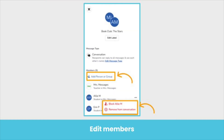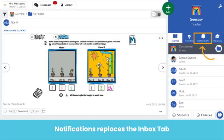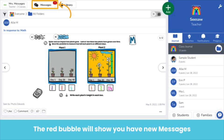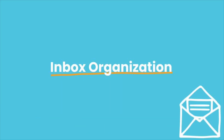Lastly, you can add or remove members from a message. A few more things: with Messages, the Inbox tab is replaced with Notifications. This is where any notification for activity in the journal will appear. The red bubble will appear next to the Messages icon when new messages have been received.